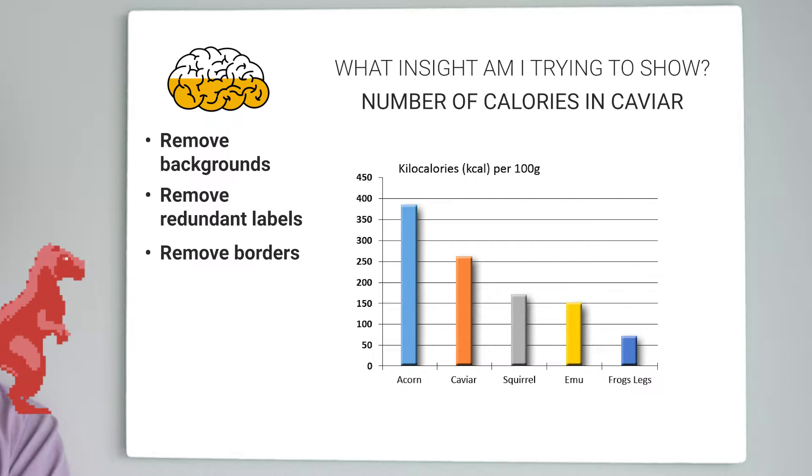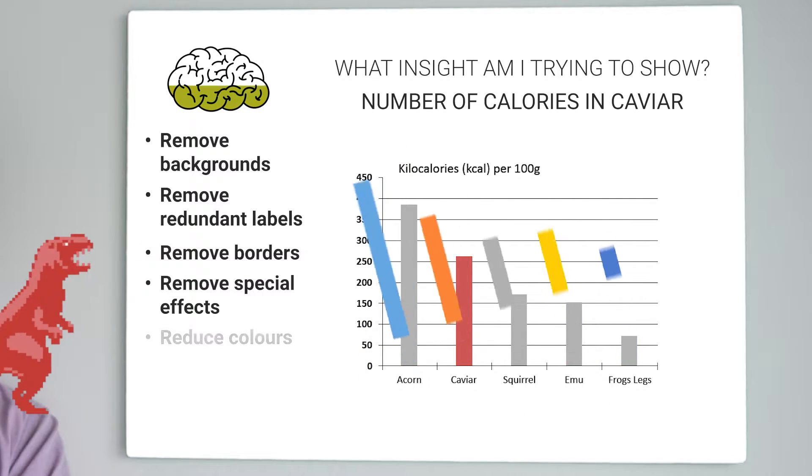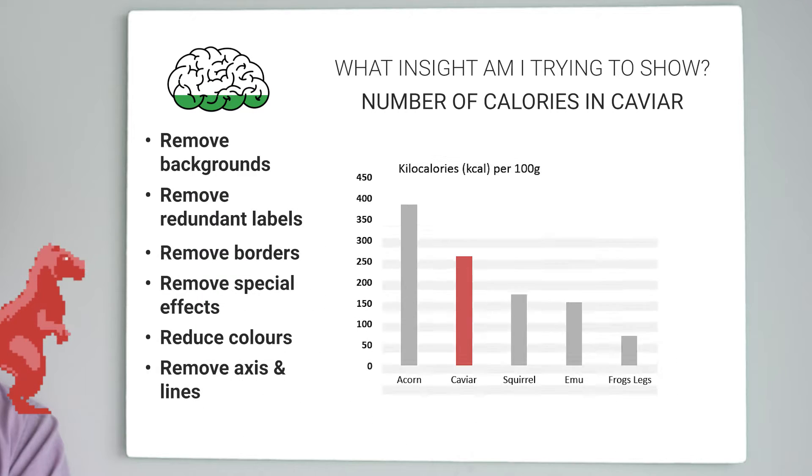Remove the special effects. Reduce the colors to focus on the caviar. Remove the axis and the lines to stop people going back and forth to work out the values.